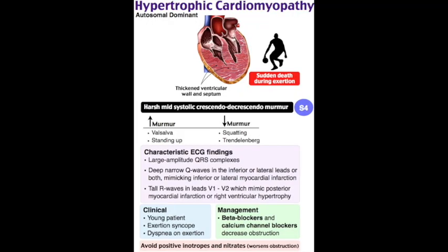Hypertrophic cardiomyopathy (HOCM) is an autosomal dominant genetic disorder of inappropriate left or right ventricular hypertrophy with diastolic dysfunction. It causes subaortic outflow obstruction due to asymmetrical septal hypertrophy and systolic anterior motion of the mitral valve. Obstruction worsens with increased contractility (exercise, digoxin, beta agonists) or decreased left ventricular volume (dehydration, decreased venous return, Valsalva maneuver), where the hypertrophied septum occludes LV outflow.